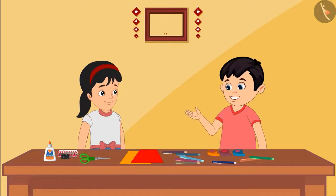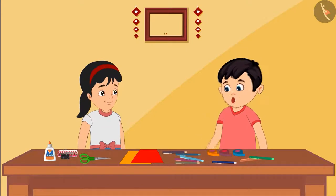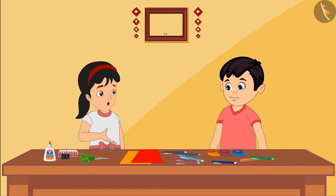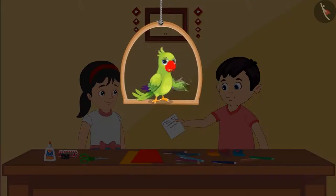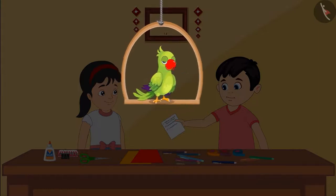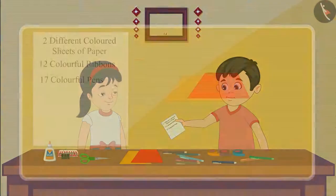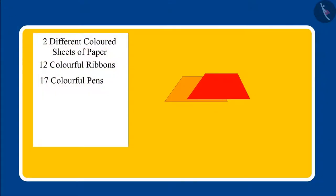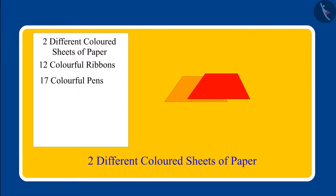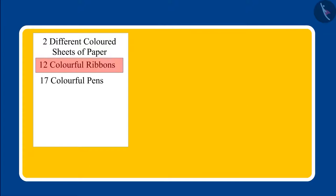Chotu insists this was what was written in the list and shows it to Pinky. Children, out of Pinky and Chotu, who do you think is correct? Let's see. First, two sheets of paper is written in the list, which Chotu brought correctly. But tell me, what is written below that?